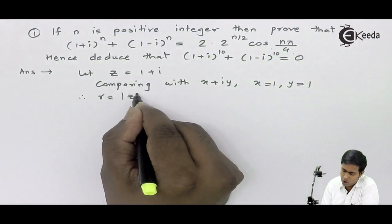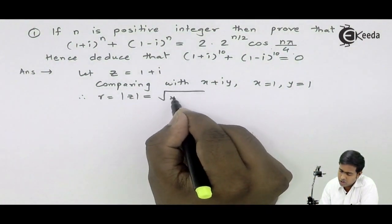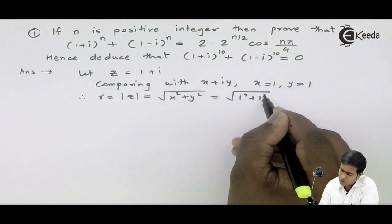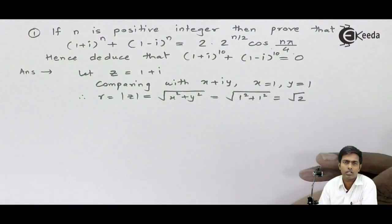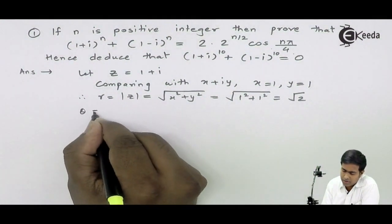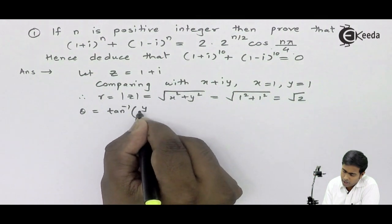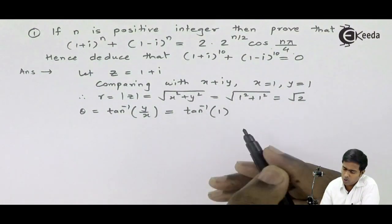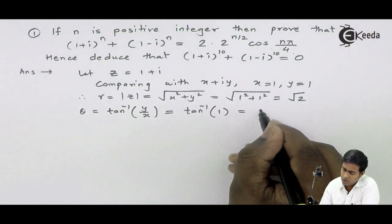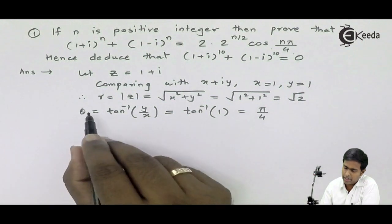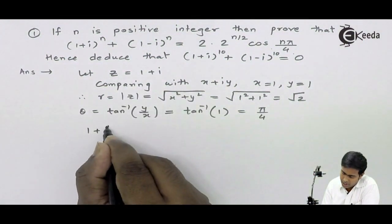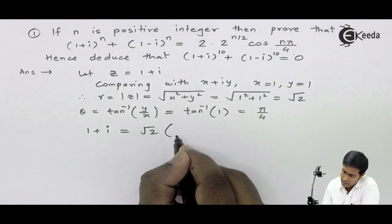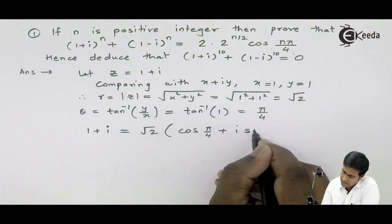Therefore, r is the modulus, which is √(x²+y²) = √(1²+1²) = √2. Now we find the argument: θ = tan⁻¹(y/x) = tan⁻¹(1/1) = tan⁻¹(1) = π/4. So 1+i in Cartesian form is equivalent to polar form with r=√2 and θ=π/4, giving √2·(cos(π/4) + i·sin(π/4)).